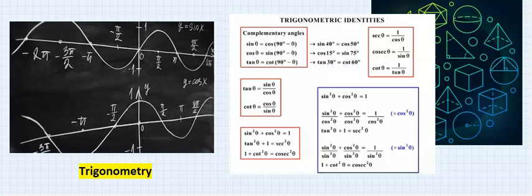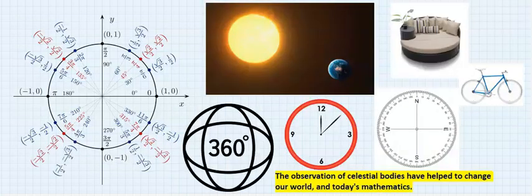The knowledge of trigonometry has helped us to describe sound and light waves, heights, measurements, theory of music, shapes, slopes, and so many other applications in real life. In conclusion, the observation of celestial bodies over many generations have helped to change our world and today's mathematics.